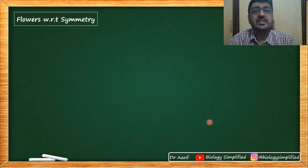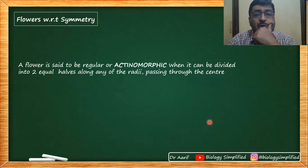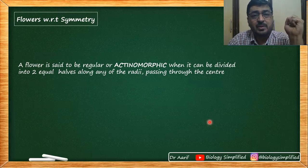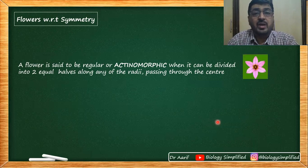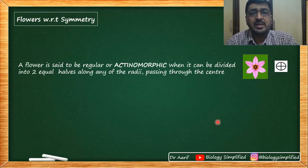With respect to symmetry, an actinomorphic flower corresponds to radial symmetry in animals. If a flower can be cut into two equal halves from any given plane, it is called actinomorphic. The symbol for actinomorphic is a small circle with a plus sign inside. Corresponding to bilateral symmetry, a flower that can be divided into two equal halves from only one plane is called a zygomorphic flower; its symbol is a percentage sign.